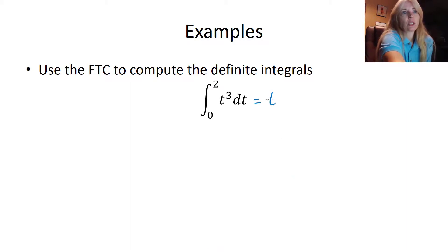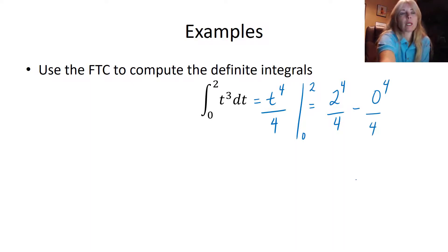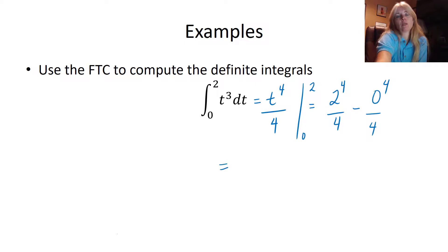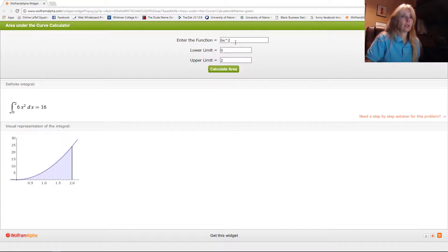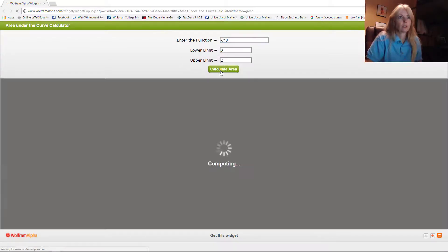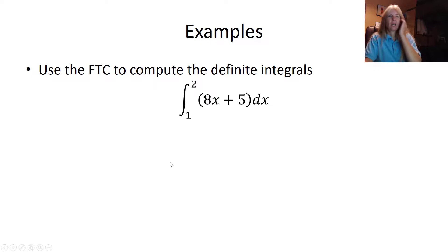Here I want the antiderivative of t³, which is t⁴ over 4, evaluated from 0 to 2. Plugging in 2 and then 0 — even though the second term is 0, go ahead and plug in your values. The top gives 2⁴ over 4, which is 16 over 4, equaling 4. The last part becomes 0. Checking t³ from 0 to 2 in the calculator confirms the answer of 4.